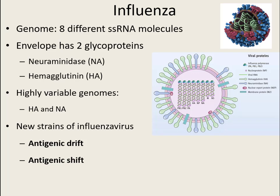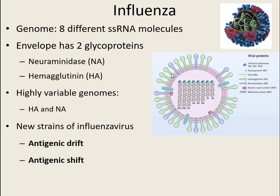Antigenic drift is why we get flu vaccines every year — not because your immune system is waning, but because every year the genetics and glycoproteins slightly change, and what was in last year's vaccine isn't effective against the new strains this year. The CDC constantly tracks what strains are prevalent and what the NAs and HAs are doing, then makes vaccines trying to include all of them. Some years they're a little more accurate than others.